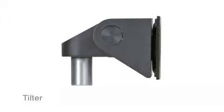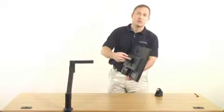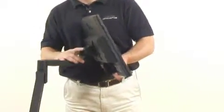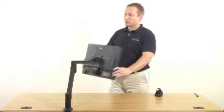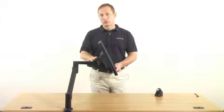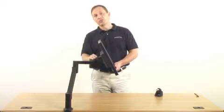This is what we call the tilter. This is the monitor pivot device. It attaches to the back of the monitor like this and then plugs right into the end of the arm. The tilter lets you adjust the pivot and rotation of your screen. You can adjust the tension of the tilter for larger and smaller monitors by turning a screw located just beneath it.